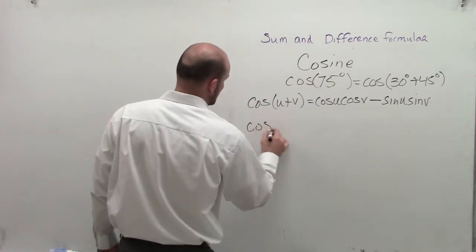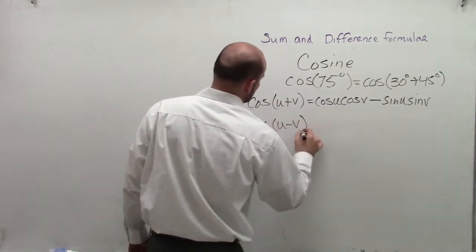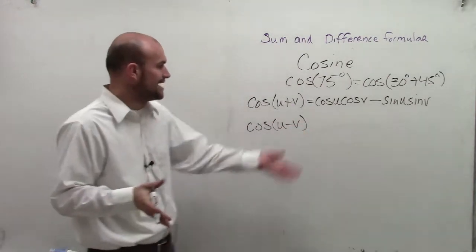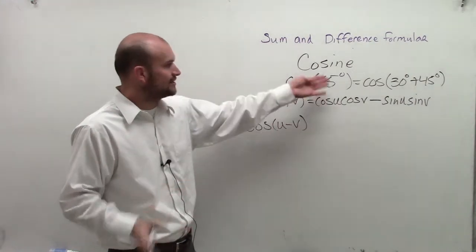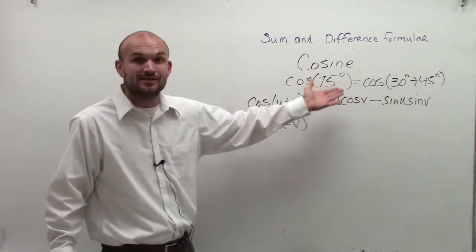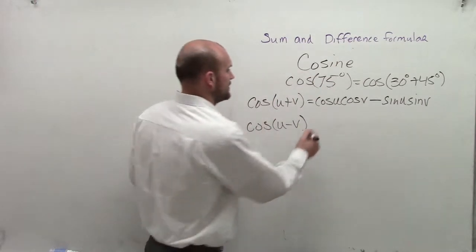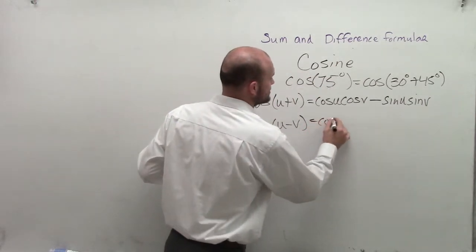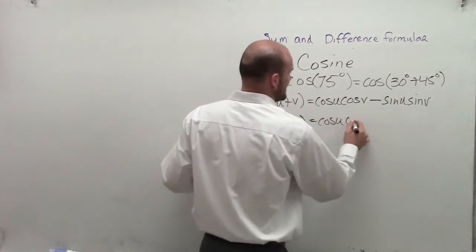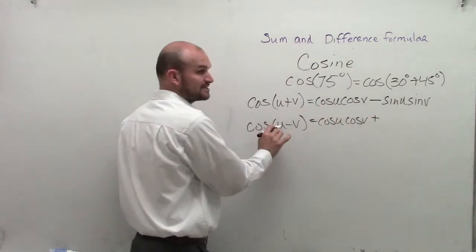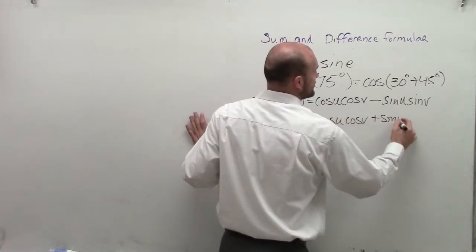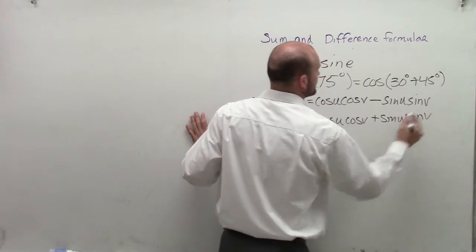For the difference formula, cosine of u minus v—if I need to subtract two angles that I can find the value of to get the angle I'm trying to evaluate for—that's the cosine of u times the cosine of v plus (opposite sign) the sine of u times the sine of v.